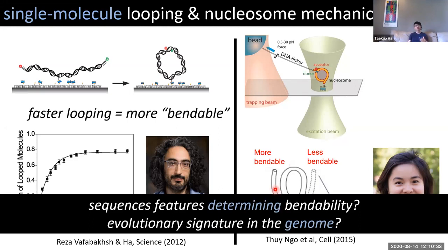The next questions are: what are the sequence features that determine bendability? For that you need a lot of different sequences — much beyond what you can do using single-molecule experiments one sequence at a time. And if bendability is important for function, then in the present-day genome we should be able to find its signatures throughout evolution.